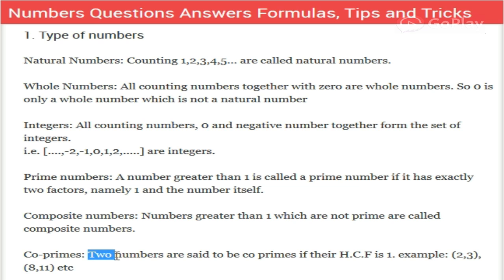Co-primes are two numbers that are said to be co-primes if their HCF is one. If the HCF of any two numbers is one, then they are co-primes with each other. For example, two and three, eight and eleven. These are the types of numbers.